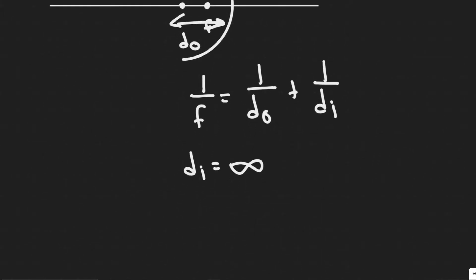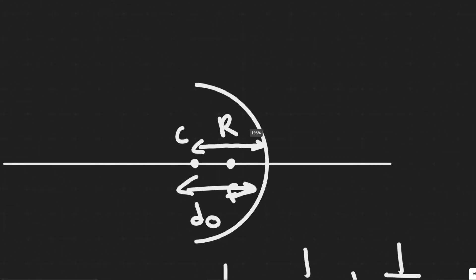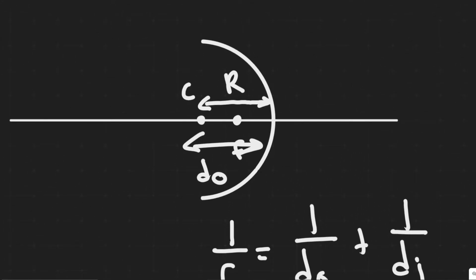To find f, the focal length, you want to imagine this mirror is like a circle, curved like this. C represents the center of the circle. We call it for a mirror, or a concave or convex mirror, the center of curvature.